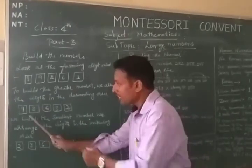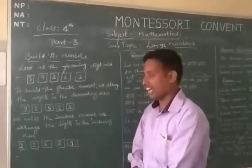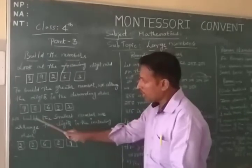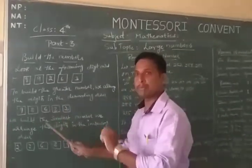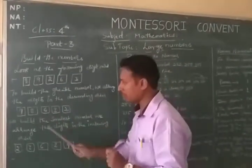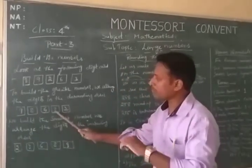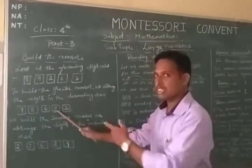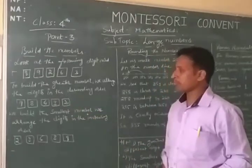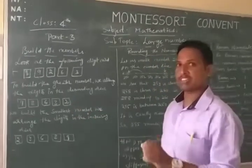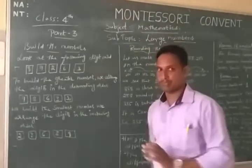And a little bit smaller is 8. And again a little bit smaller is 6. The next smaller number is 3. The last and smallest number is 2.